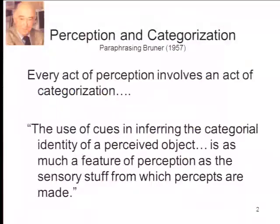Let's pick up with a new topic, which is social categorization. The reason we're doing this is because, as Bruner pointed out, every act of perception is an act of categorization. You haven't completed the process of perceiving an object until you've identified it and matched it up to other things you know about — that is, categorize it in terms of what it's the same as and different from. So if we want to continue our discussion of how social perception happens, we need to know something about how categorization happens as well.